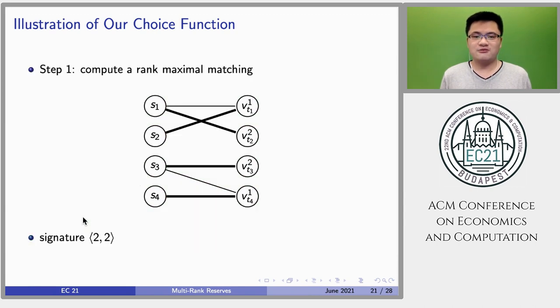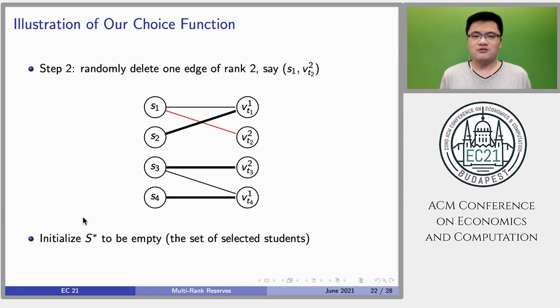The first step is to compute a rank-maximal matching. As shown in the figure, both edges are matched in the rank-maximal matching. Its signature is 2-2, which means that two edges of rank 1 and two edges of rank 2 are matched. Since the school capacity is 3, we need to remove one edge of rank 2. The red edge from student S1 to reserved seat w with superscript 2 and subscript T2 is removed.